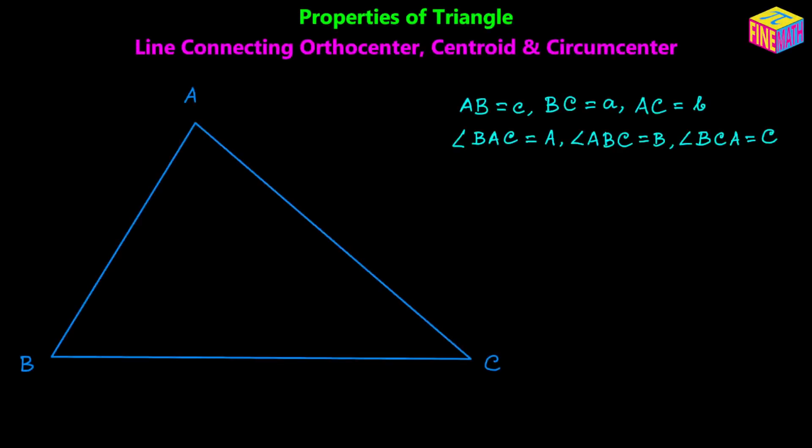Hi everyone. In this video we are going to prove that the orthocenter, centroid and circumcenter of a triangle are all collinear, and also that the centroid divides the line joining the orthocenter and the circumcenter in a 2 to 1 ratio.